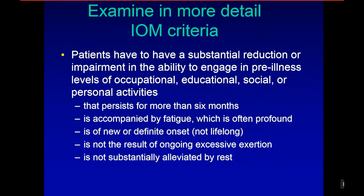You can't just say 'a substantial reduction of impairment' or 'fatigue that persists for more than six months, is new or definite onset, not the result of ongoing exertions, not substantially alleviated by rest.' All these topics need to be operationalized. None of them have been operationalized since 2015, and that's the problem — because everyone is going to use these criteria differently.